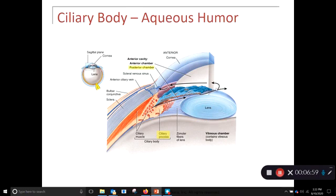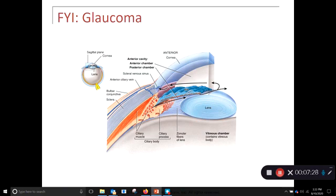But it also, this ciliary process releases liquid out into this anterior chamber or anterior cavity, into the posterior chamber. This liquid is called aqueous humor. Aqueous because it's really quite liquid-like, it's fluid. It'll flow out from behind the posterior chamber through the pupil, that little black spot smack dab in the middle of the eye, and out into the anterior chamber. And then it's going to get reabsorbed into this little scleral venous sinus.